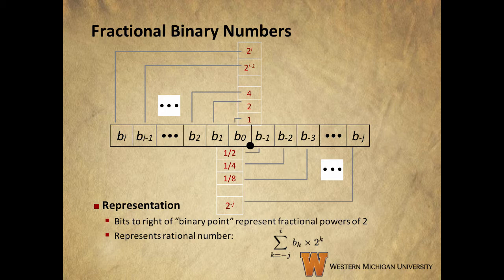To the right of the binary point, we just have negative powers of 2. So the first bit to the right has a weight of 2 to the minus 1, or 1 half. The next has a weight of 2 to the minus 2, or 1 quarter, etc. So rather than indexing from 0 to i, we index our bits from negative j to i. This represents a rational number. We just sum the values of the bits times 2 to the k, with k ranging from negative j to i.